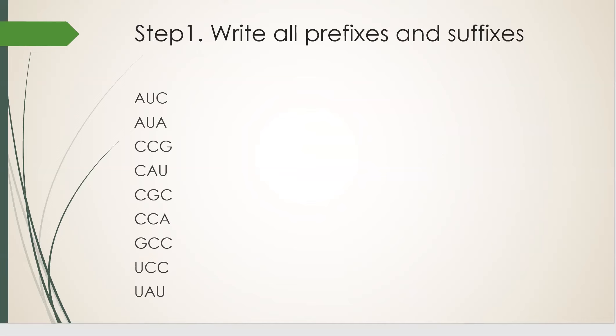So step one, write down all the prefixes and suffixes in all the reads. In AUC, there's an AU and a UC. In AUA, there's another AU. Well, we already have it, so we don't write it down again. And there's a UA and we write that down. Next, in CCG, there's a CC and CG. They're both new, so we write them both down. Next, in CAU, there's a CA. We write that down. And then AU. But we already have AU, so we don't write it down again. So we keep going. And we're done. This is the complete list of all prefixes and suffixes.